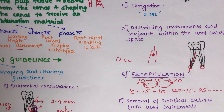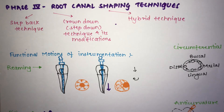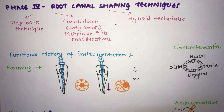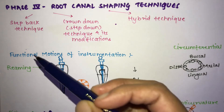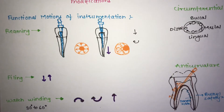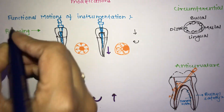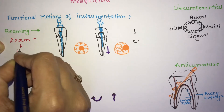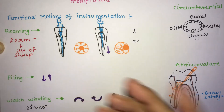Moving towards the functional motions of instrumentation, there are six to seven instrumentation motions for cleaning and shaping. These are important because problems in any step of root canal treatment can lead to endodontic failure. The first functional motion is rimming — the term 'rim' indicates the use of a sharp-edged tool for enlarging a hole.